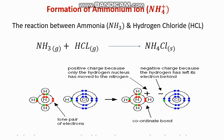The ammonium NH₄⁺ cation is formed, but where does the dative bond form? When the NH₄⁺ ion is formed, the fourth hydrogen is attached by a dative covalent bond. The coordinate bond forms between the nitrogen and the fourth atom of hydrogen.